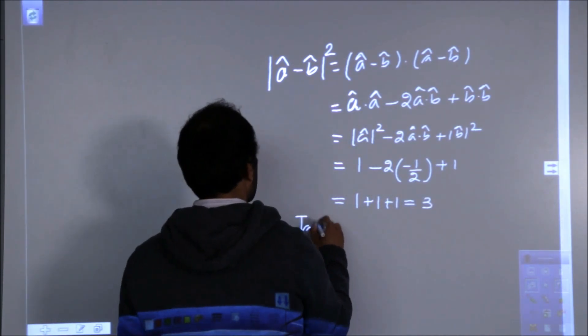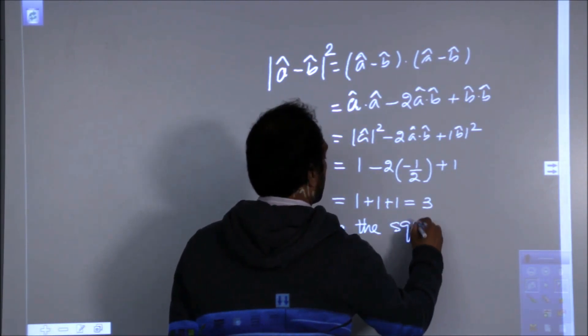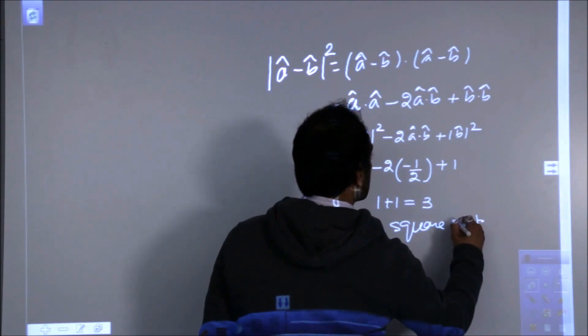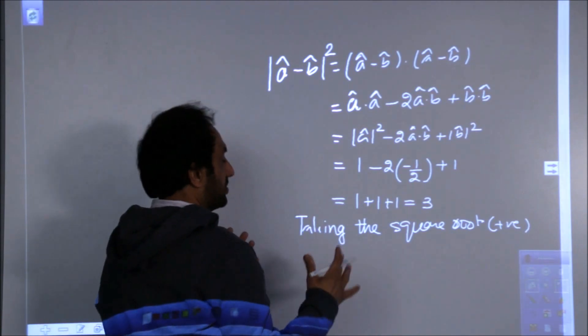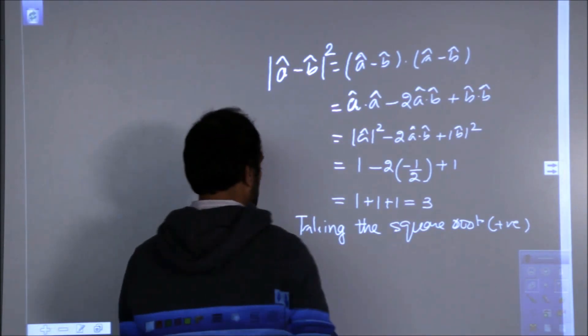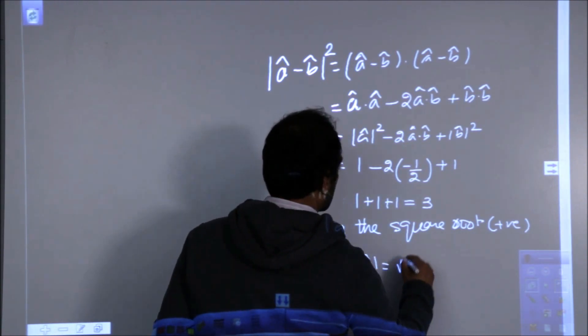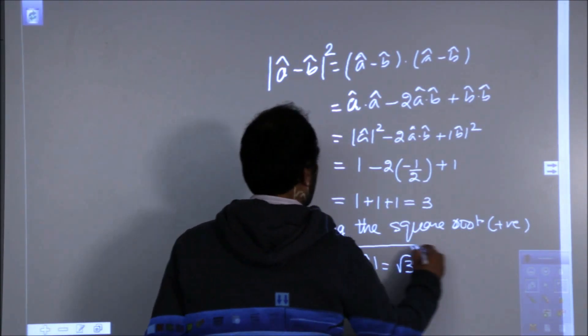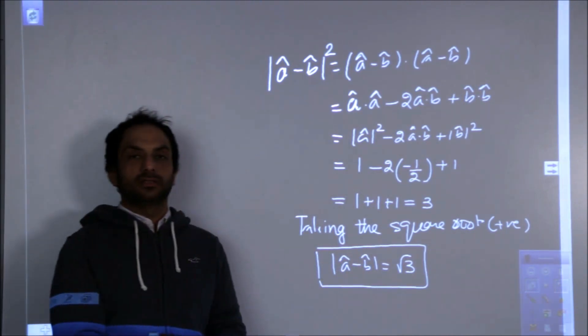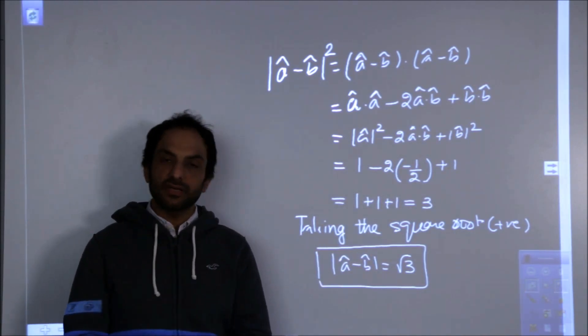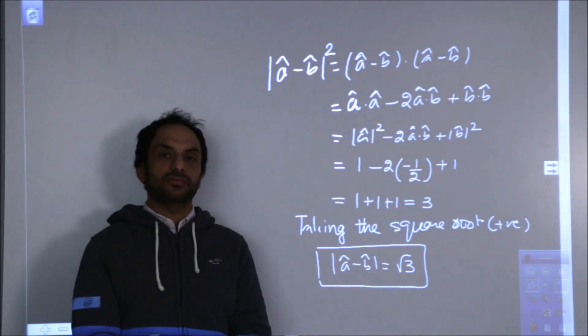So taking the square root, a positive square root because it should not be plus minus, because it is a magnitude, so it should not be plus minus. So, the time we take a root, it turns to root 3. So the value of the magnitude of their difference is square root of 3. So the sum of 2 unit vectors is a unit vector, but the magnitude of their difference is square root of 3.